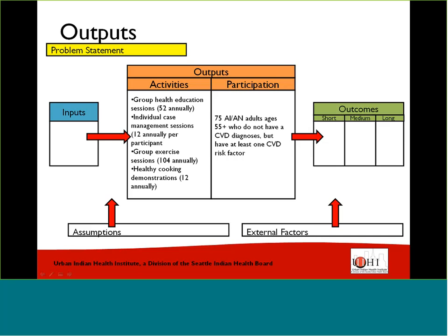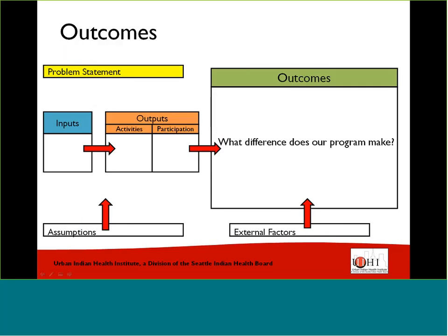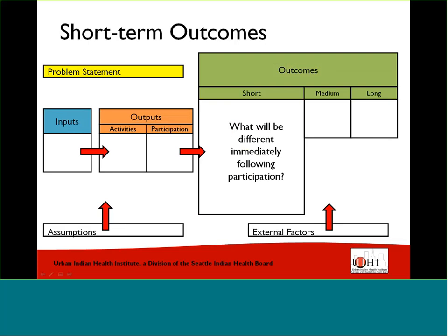So if we do these activities with these participants, then what will our outcomes be? Outcomes are the 'so what' of our program — the results that impact our target population. Why does it matter that we are conducting these activities? In addition to long-term goals, it's also important to have short-term and medium-term outcomes that can be clearly linked to resulting from the program itself. These outcomes are specific statements of change we hope to see in the participants or target population. Short-term outcomes are what we expect to see immediately following the activity or within the first year.